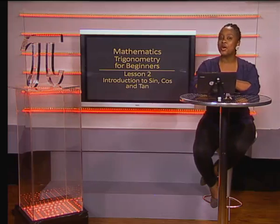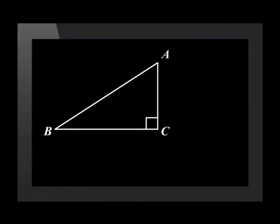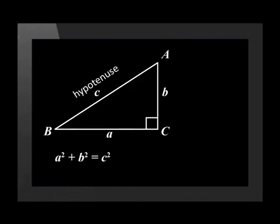Let's revise what we know about these triangles. A right angle triangle has a 90 degree angle. The hypotenuse is the longest side of the triangle and is opposite the right angle. Pythagoras' theorem states that the sum of the squared sides is equal to the squared hypotenuse. In other words, a squared plus b squared is equal to c squared.